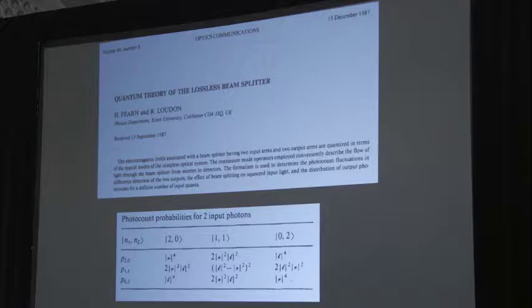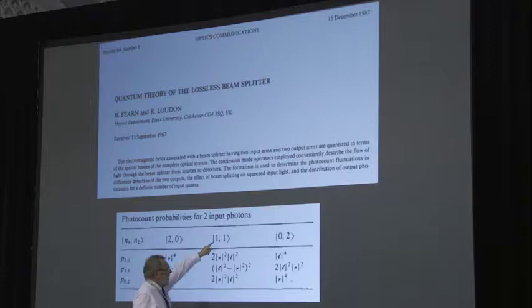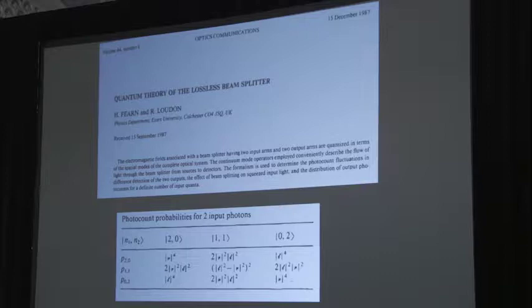Or should it be the Fearn-Loudon effect? Because I first heard about this not from Leonard Mandel but from Rodney Loudon. And there is a paper that's essentially almost at the same time by Fearn and Loudon on the quantum theory of the lossless beam splitter, where he points out, or they point out, that if you put one, one in, you don't get one, one coming out again. And it's actually in Rodney's paper. Didn't do the experiment of course. So it could be called the Fearn-Loudon effect if you really wanted. I'm going to come back to this forgotten paper business.